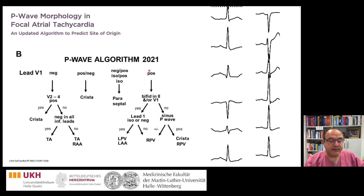Going back to the algorithm, V1 is positive, so the next step is to look at V1 or lead 2 to check for notching in the P-wave — and this is exactly what we see here in V1.